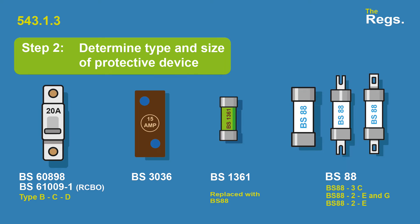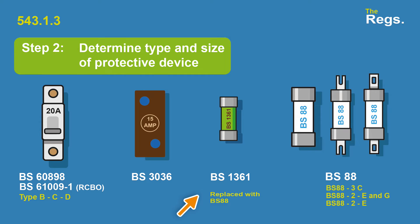Step two is to determine the type and size of the protective device. In our scenario we're using the BS88-3, but you've also got your BS60898 — your typical MCB — or your RCBO, your 61009, and various different types: B, C, and D. BS3036 is still recognised in the book. BS1361s are being replaced with the BS88s. So we've got a BS88 type 3.